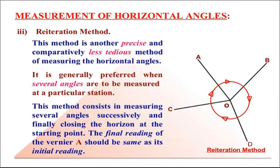Starting with measurement of horizontal angle by reiteration method. This method is another precise and comparatively less tedious method for measurement of horizontal angles. It is generally preferred when several angles are to be measured at a particular station. This method consists in measuring several angles successively and finally closing the horizon at the starting point.